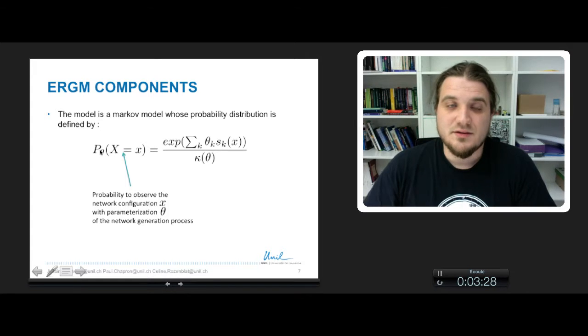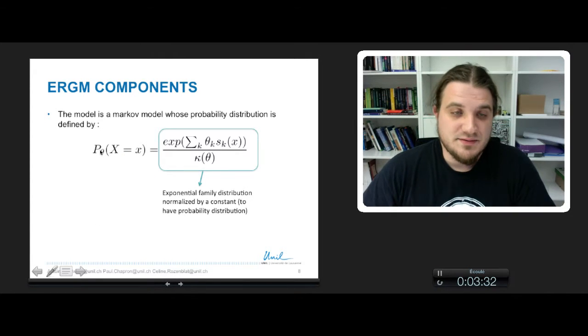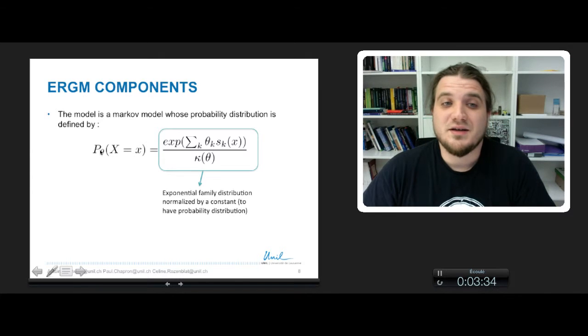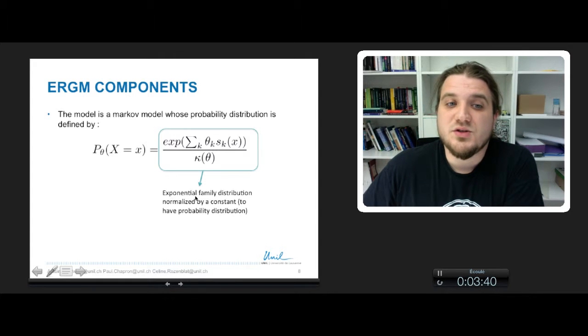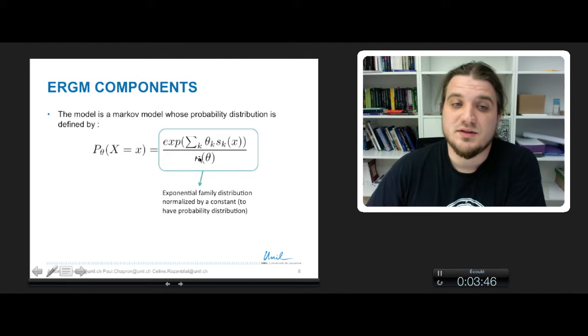This probability under the parametrization theta is equal to the right side of the equation. And this formula is an exponential family distribution, which is normalized by a constant in order to have a probability between 0 and 1.